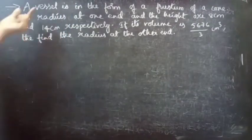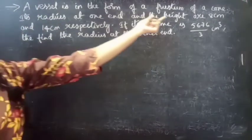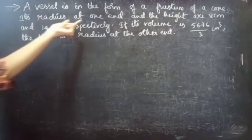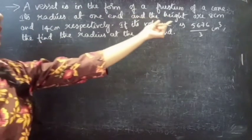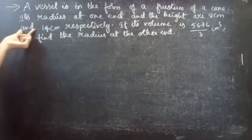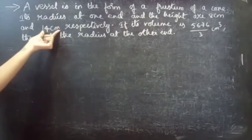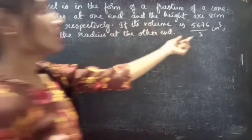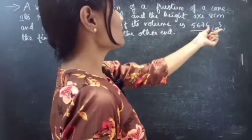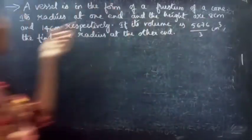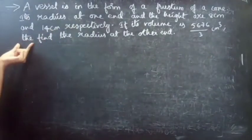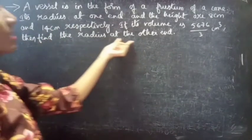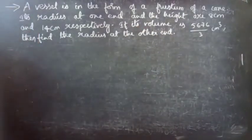Problem: A vessel in the form of a frustum of a cone — its radius at one end and height are 8 cm and 14 cm respectively. If its volume is 5676/3 cm³, then find the radius at the other end.